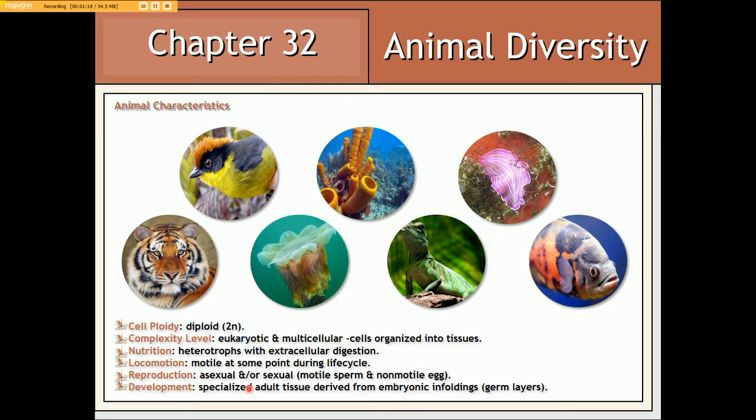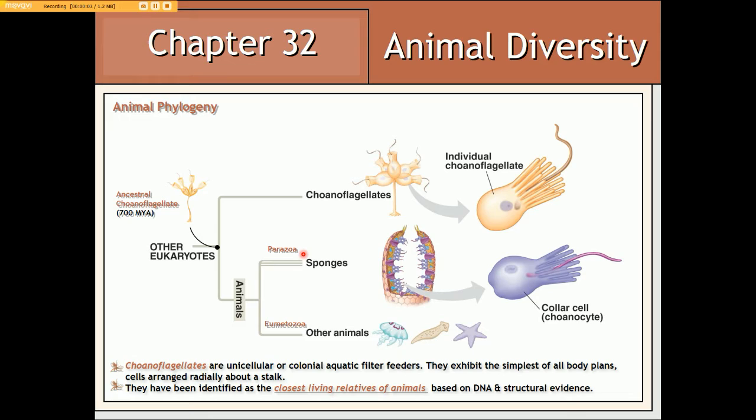According to this phylogenetic tree, all animals can be divided into two main groups: the parazoans, which lack true body tissue and are only represented currently by sponges, and the eumetazoa, which do possess true tissue and include all other animal groups. Both can trace their ancestry back to organisms known as coanoflagellates, which existed about 700 million years ago in the pre-Cambrian.